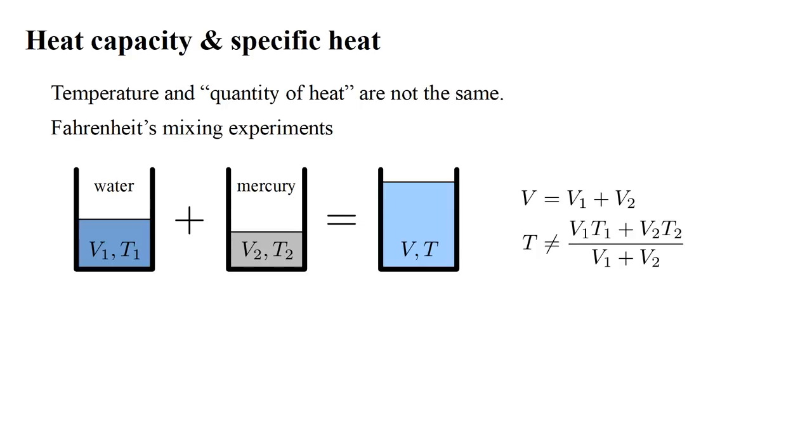produces a mixture with volume V and temperature T. The final volume is, to a good approximation, equal to the sum of the two initial volumes, but the temperature is not a weighted sum of the initial temperatures, with volumes as weighting factors.